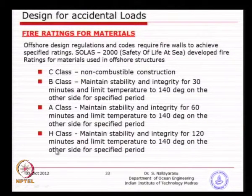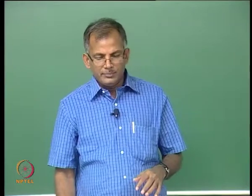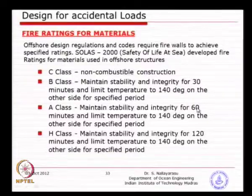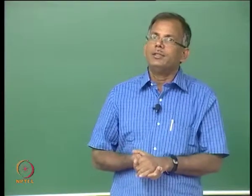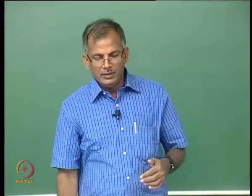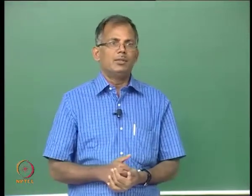The H class maintains stability and integrity for 2 hours and limits the temperature to 140 degrees C on the safe side of the wall. The A class barrier requires 1 hour and 140 degrees. In all three cases, the temperature must be brought below 140 degrees. The difference is only the time duration — H class for 2 hours, A class for 1 hour, B class for half an hour. When you design a firewall, if you are given an A class design, you must maintain structural stability for 1 hour and limit the temperature to 140 degrees.